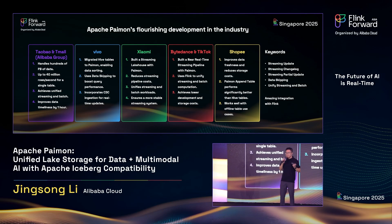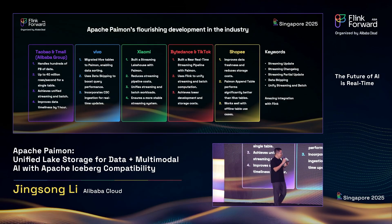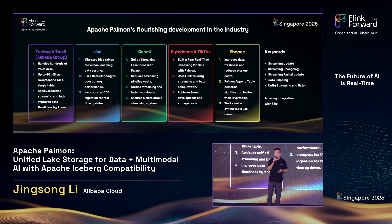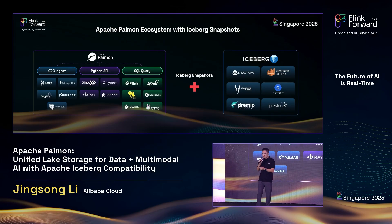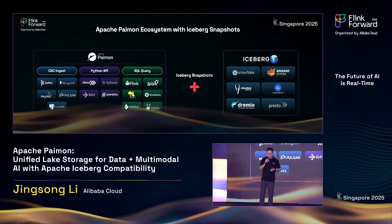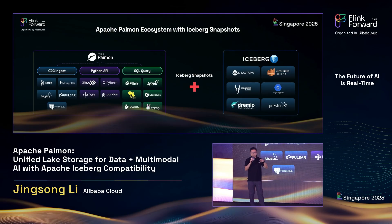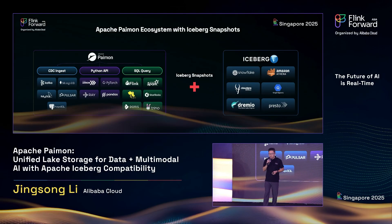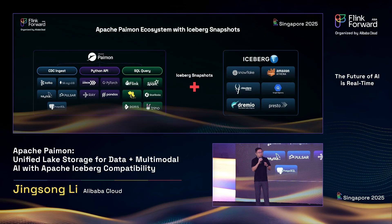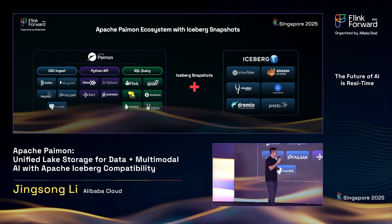The core keywords of payment are: streaming updates, streaming changelogs, streaming partial updates, data skipping, and unified streaming and batch. The core thing is that payment has amazing integration with Apache Flink. But just Flink is not enough — payment also has a very rich ecosystem: CDC ingestion, Python API, Spark, Hive, StarRocks, Doris, Trino. If your company has no lake format, you can build a complete ecosystem based on payment. If your company already has an Iceberg ecosystem, payment can be considered as part of that ecosystem because payment has a feature about Iceberg snapshots — payment can produce Iceberg snapshots automatically.